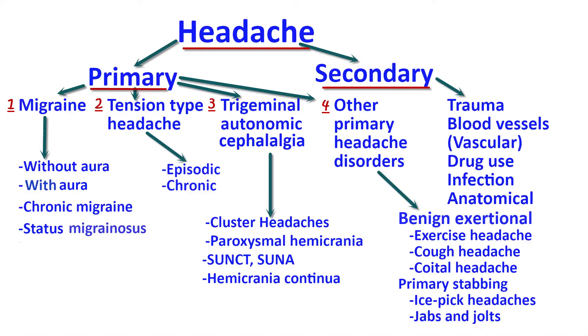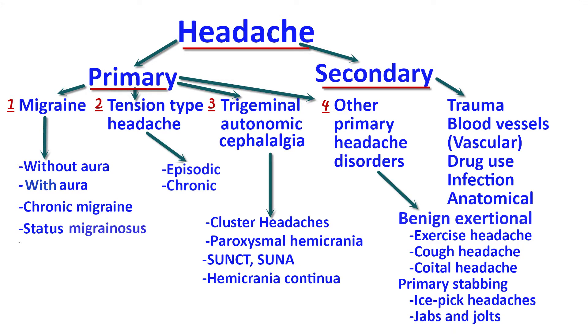Paroxysmal hemicrania is also a form of headache in this group, accompanied by autonomic symptoms, occurring up to 20 times per day and lasting five to 30 minutes at a time. SUNCT (short-lasting unilateral neuralgiform headache attack with conjunctival injection and tearing) and SUNA (short-lasting unilateral neuralgiform headache attack with autonomic symptoms) are fleeting headaches lasting seconds to minutes on one side of the head, occurring up to 200 times per day, accompanied by autonomic symptoms.